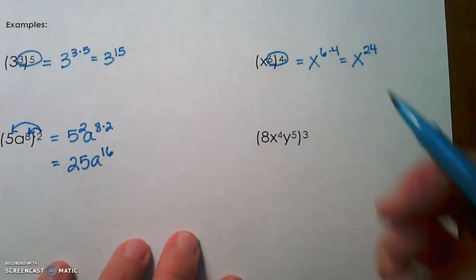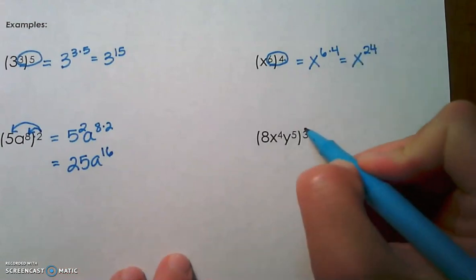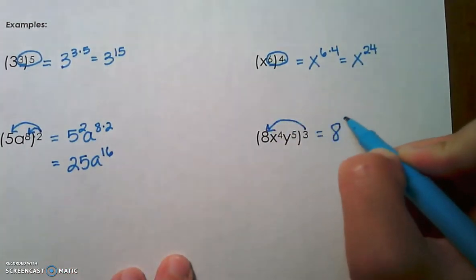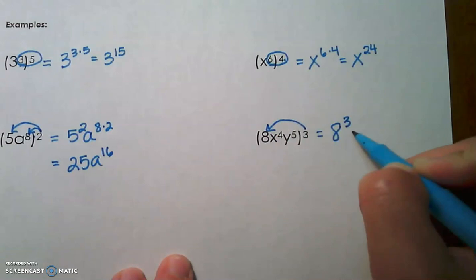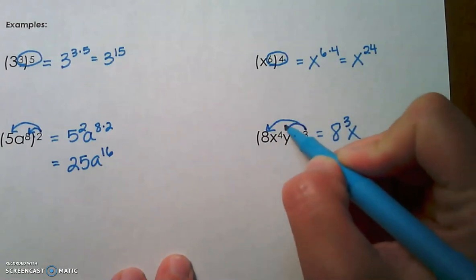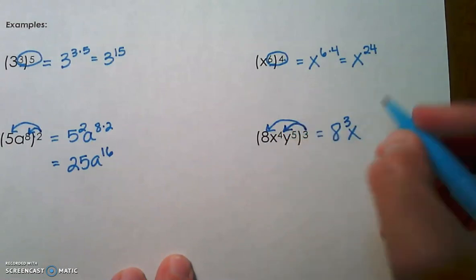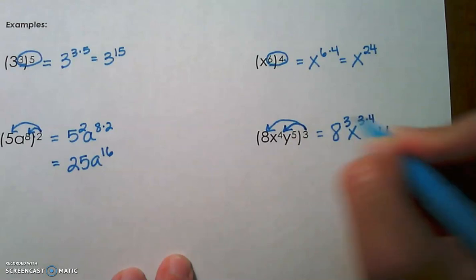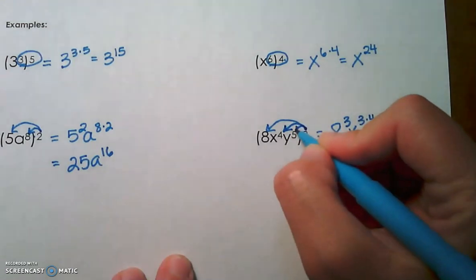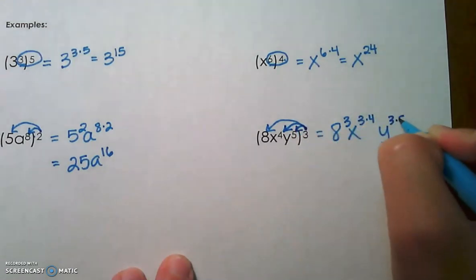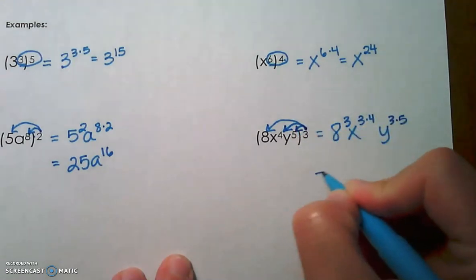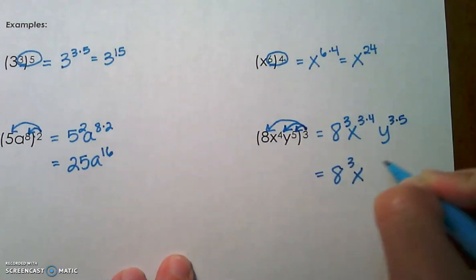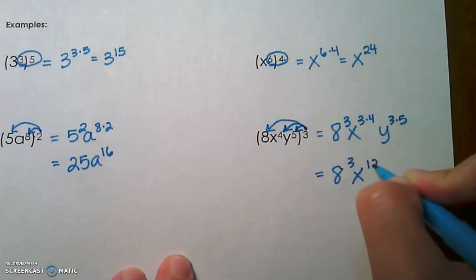Alright, our final example. Let's distribute the 3: to the 8, which gives us a cubed; x to the 3 times 4 — multiply the exponents; and y to the 3 times 5. So we're going to end up with a cubed, x to the 12th, y to the 15th.